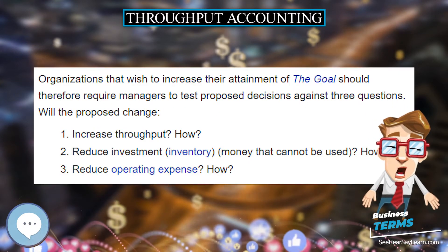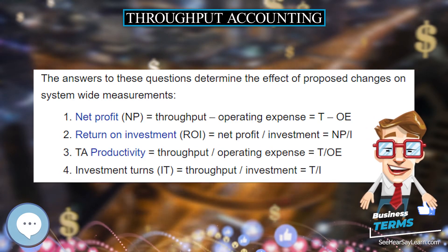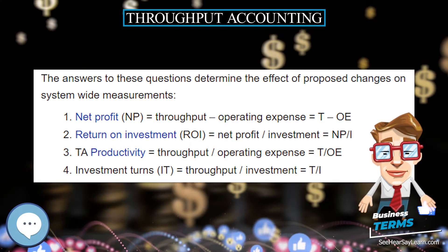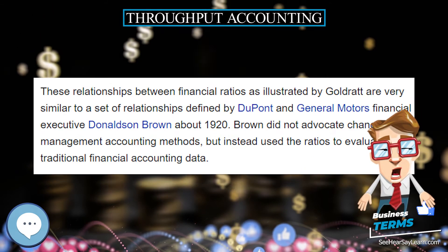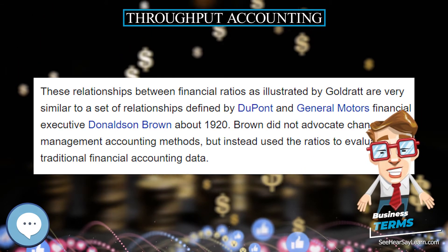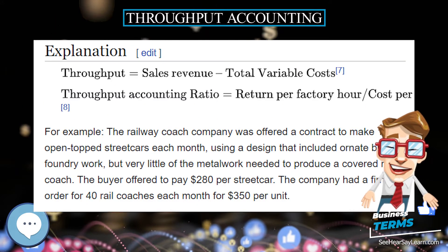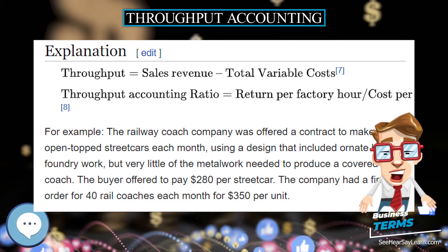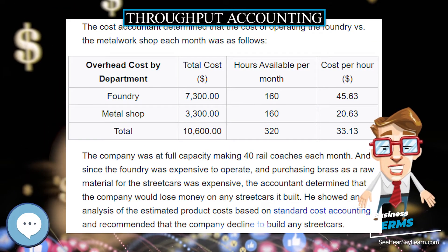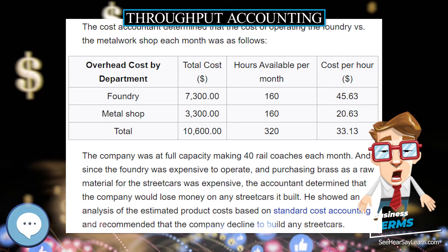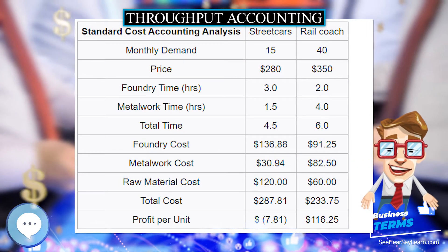One of the most important aspects of throughput accounting is the relevance of the information it produces. Throughput accounting reports what currently happens in business functions such as operations, distribution, and marketing. It does not rely solely on GAAP's financial accounting reports, that still need to be verified by external auditors, and is thus relevant to current decisions made by management that affect the business now and in the future.